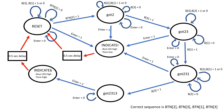One important thing to note is that there's an asynchronous clear in the code. If clear goes low, no matter where we are in the state machine, we always return to reset. This simulates a real keypad on a door — say you entered the wrong button mid-sequence; you can press clear to go back to reset and enter the correct sequence. For example, if we're in 'got23' and realize we pressed the wrong button, pressing clear brings us back to reset so we can start over and get to indicate blue.